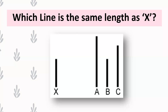So today we're starting with the next topic, which is basically looking at the next type of social influence on behaviour. Before we actually look at what that social influence on behaviour is, I want you guys to look at this slide and just answer this question: which line is the same length as the line X?